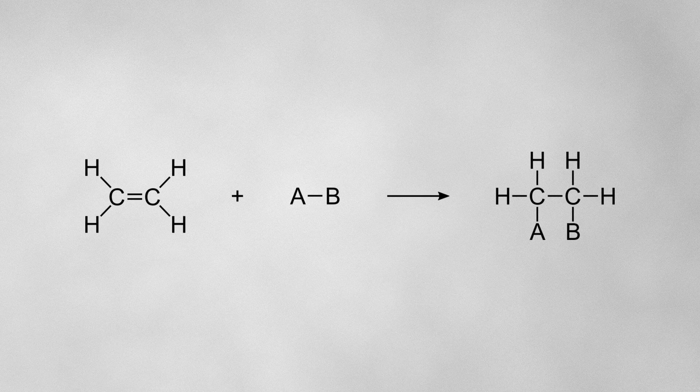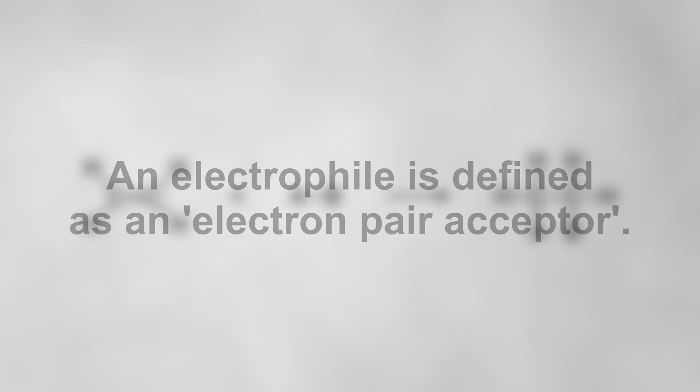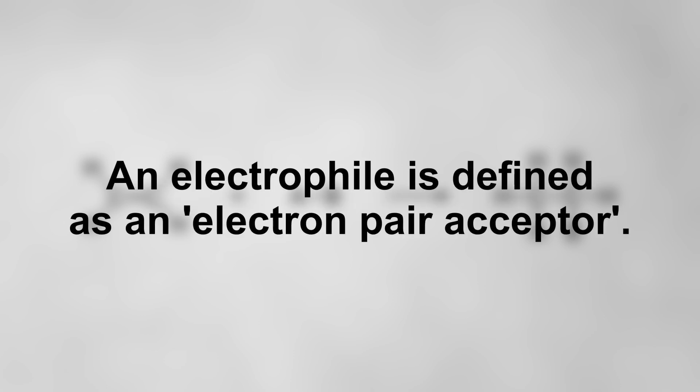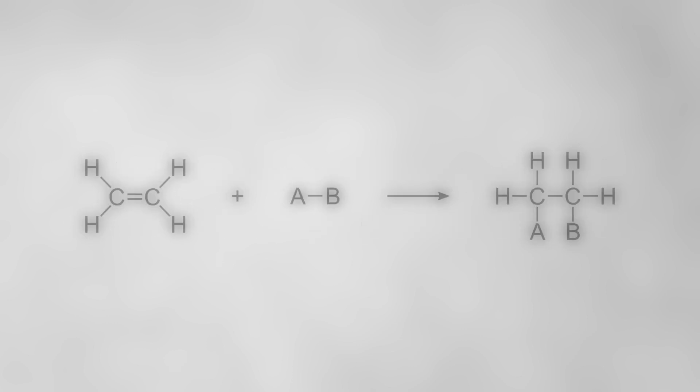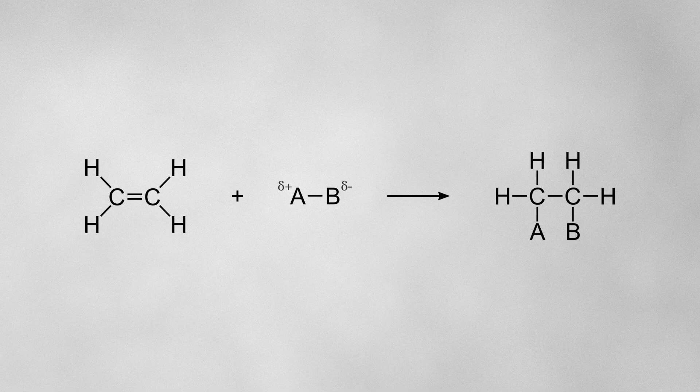When an electrophile adds to a double or triple bond, it occurs via a mechanism called electrophilic addition. An electrophile is defined as an electron pair acceptor. This usually means it will have an atom with a partial positive charge, so that it can attract negatively charged electrons.